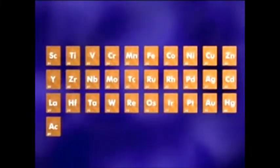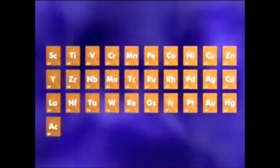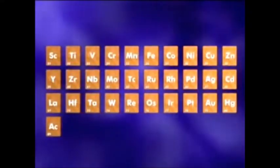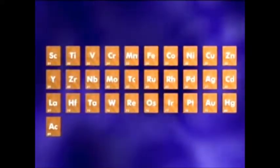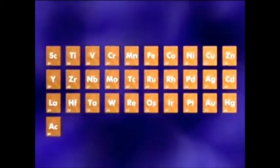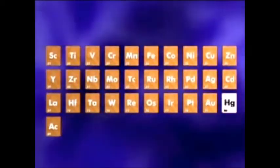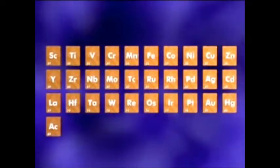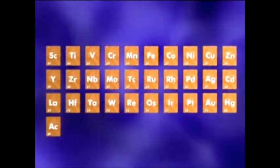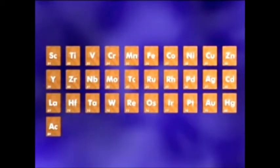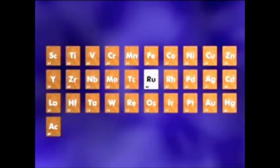The large block in the middle of the periodic table is home to the transition metals, including well-known metals such as iron, copper, gold and mercury. Other more unusual transition metals include scandium, niobium and ruthenium.